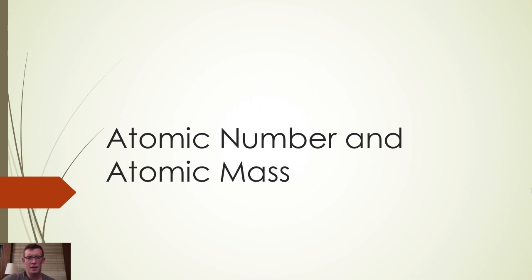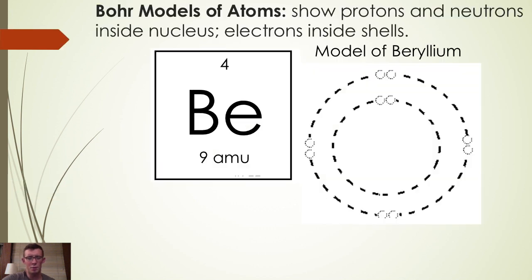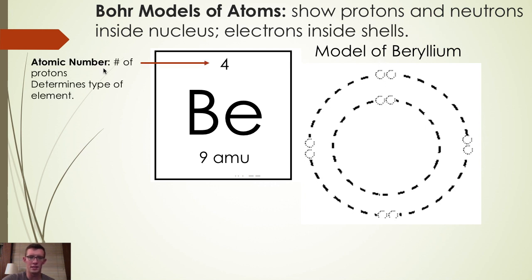Hi chem team. Today in class you guys practiced drawing Bohr models with protons and neutrons inside of the nucleus and filling in electrons into orbitals inside of electron shells. In this process you learned that the atomic number of an atom is determined by the number of protons and determines which type of element an atom is.